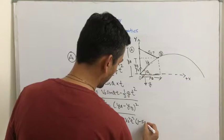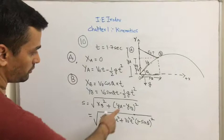It becomes V0 square t square and yA minus yB. So this will be 1 minus sin theta whole square.